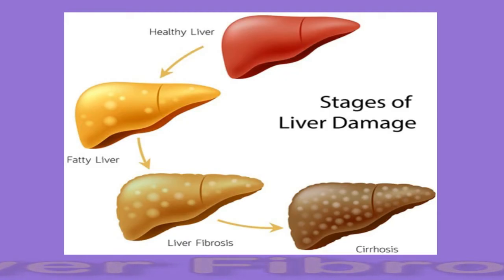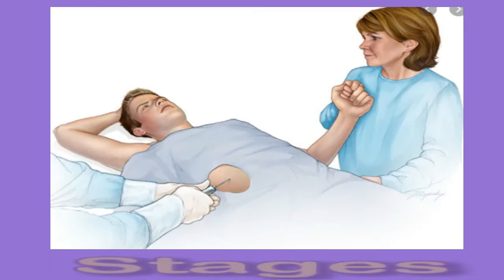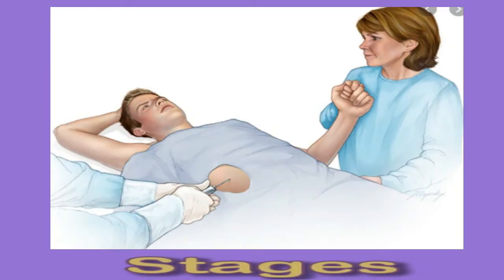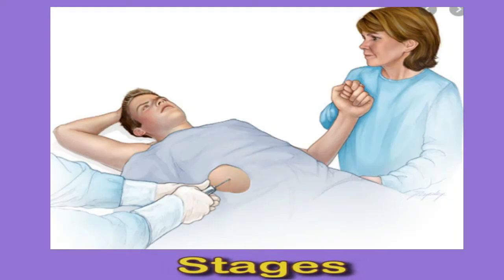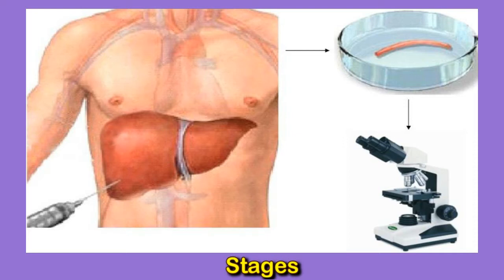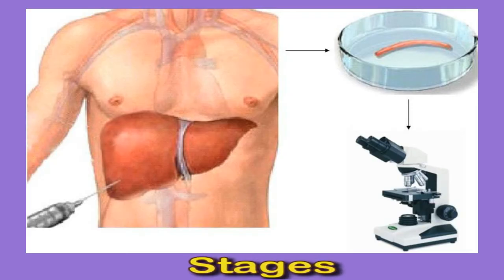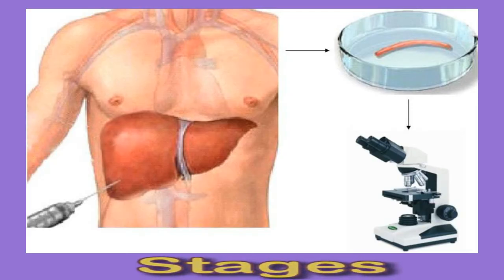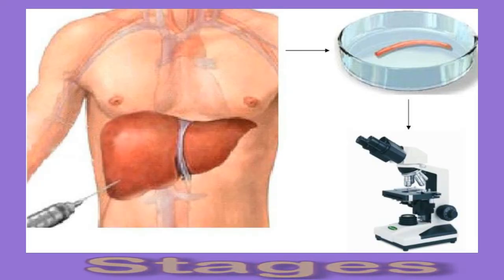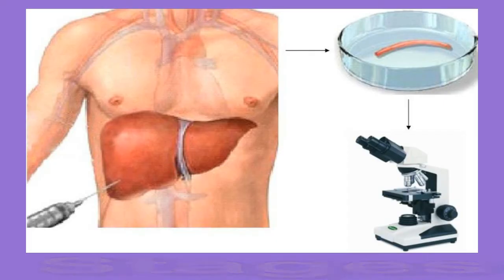If a doctor believes that someone has liver fibrosis, they will carefully collect a small tissue sample or biopsy from the liver using a large needle. A pathologist, which is a doctor who specializes in finding the root cause of disease, will then examine the sample under a microscope. They do this to assess the extent and type of damage. Determining the degree of fibrosis is difficult because pathologists only have a small sample to work with, and other doctors can also assess the same sample in different ways.